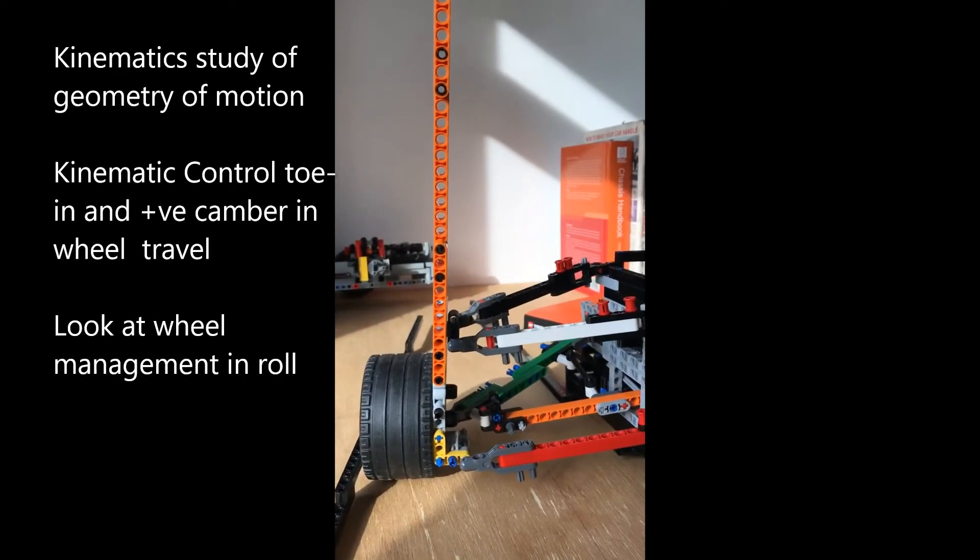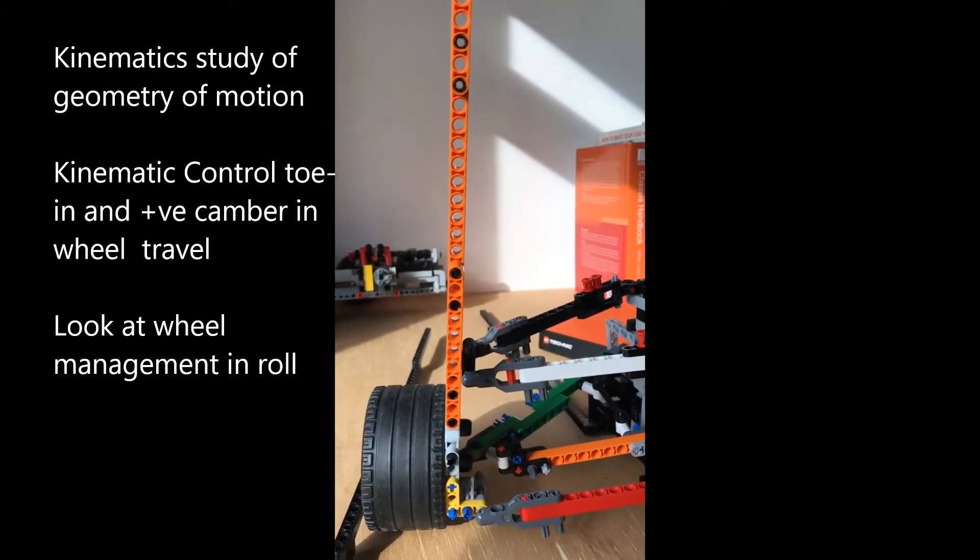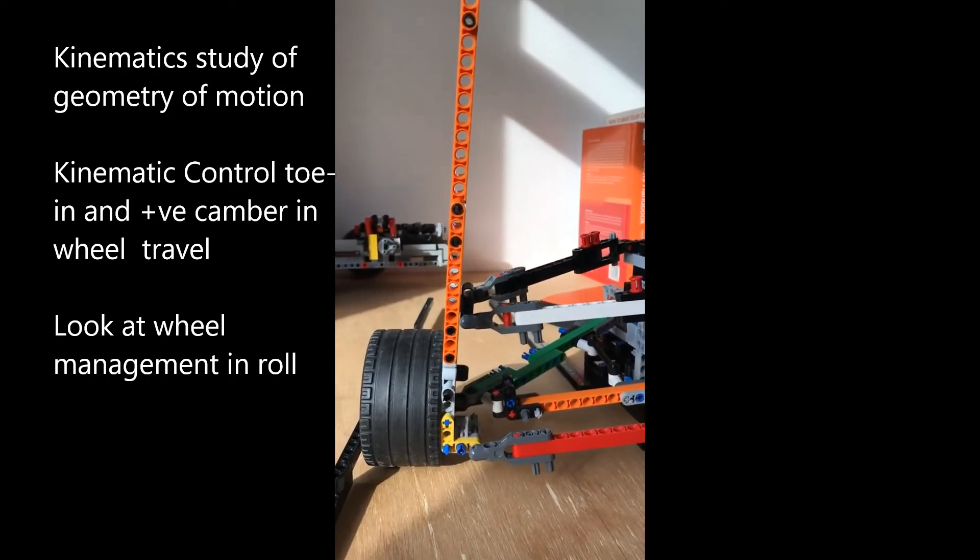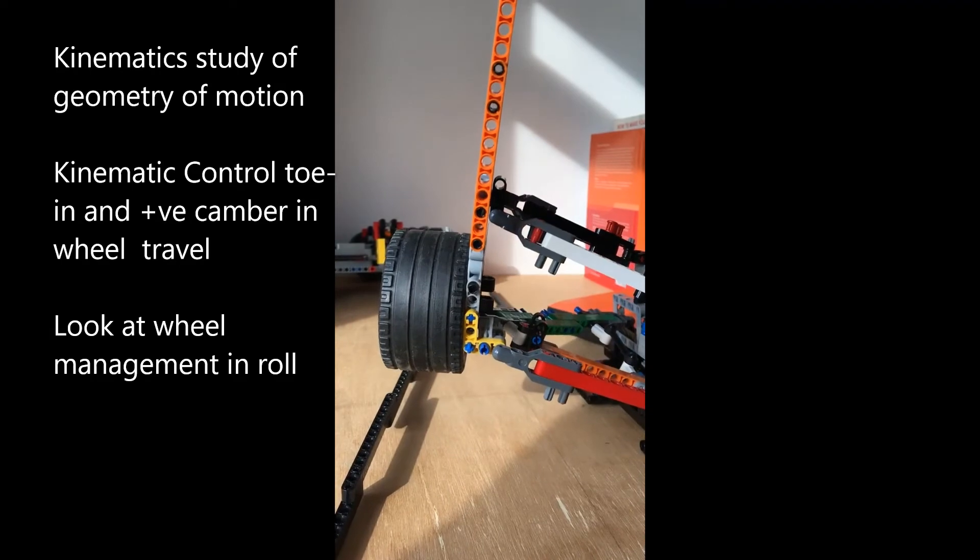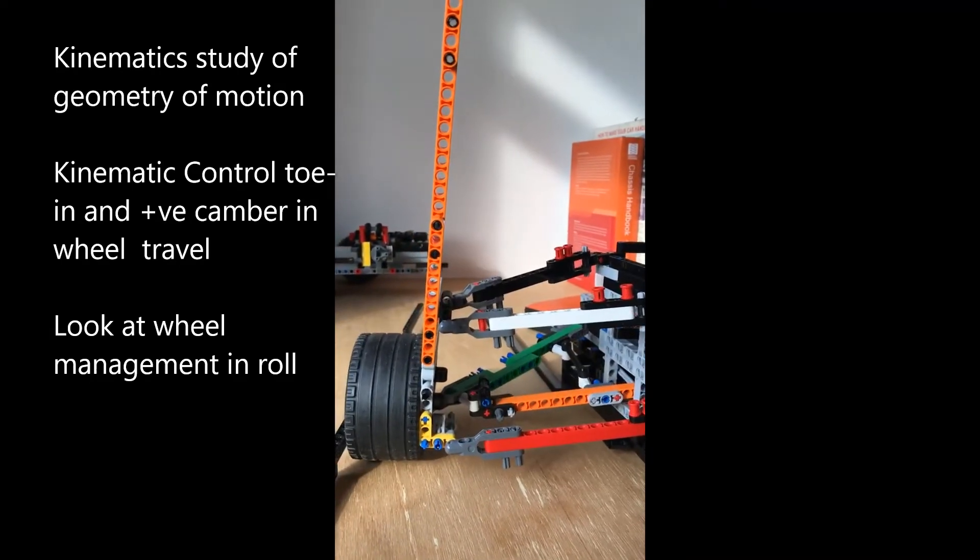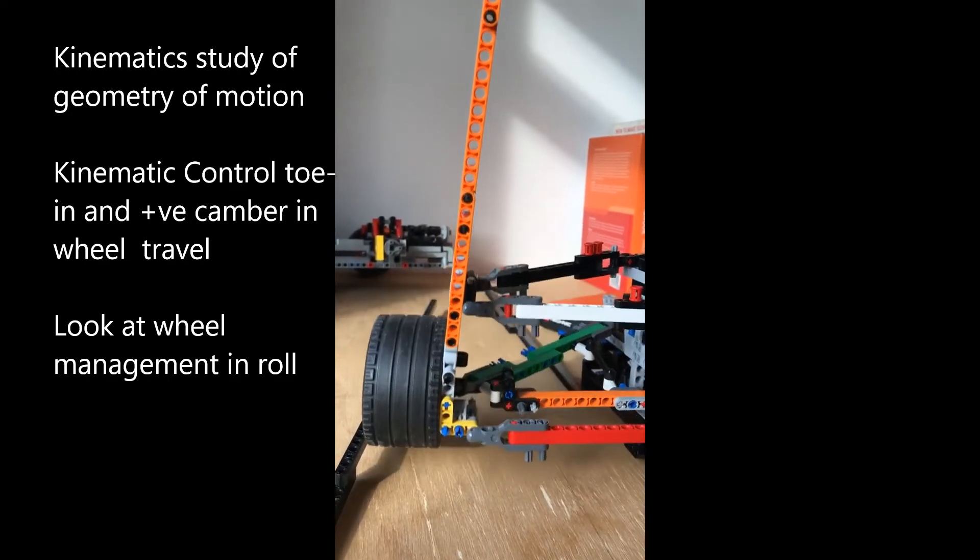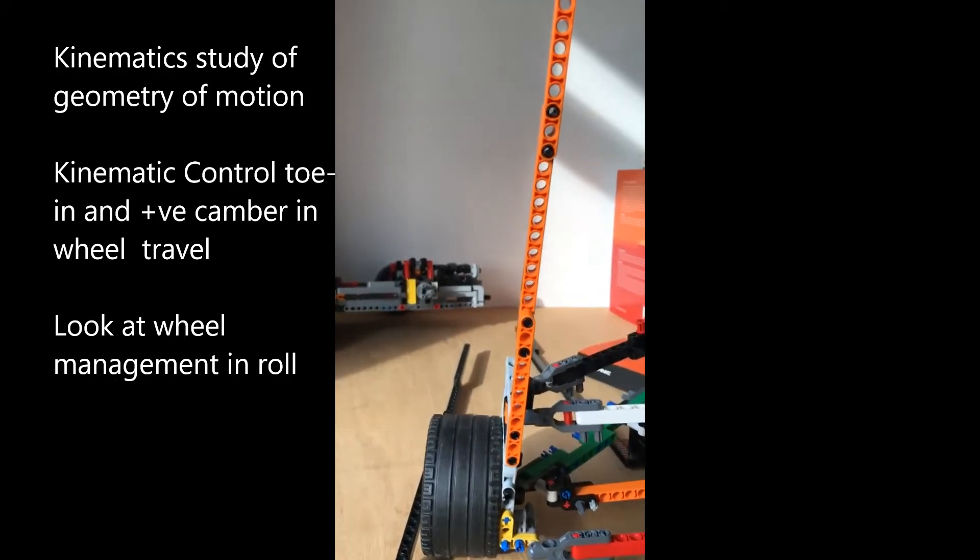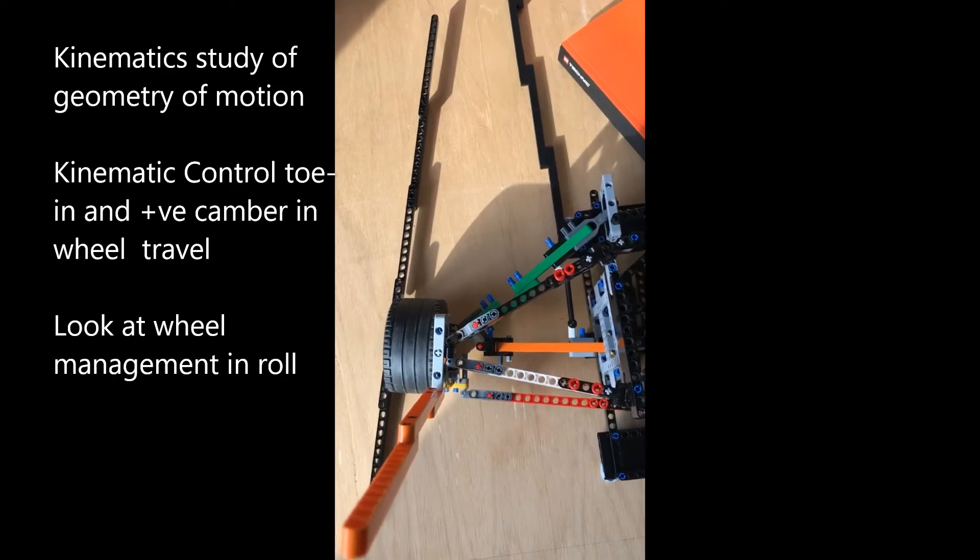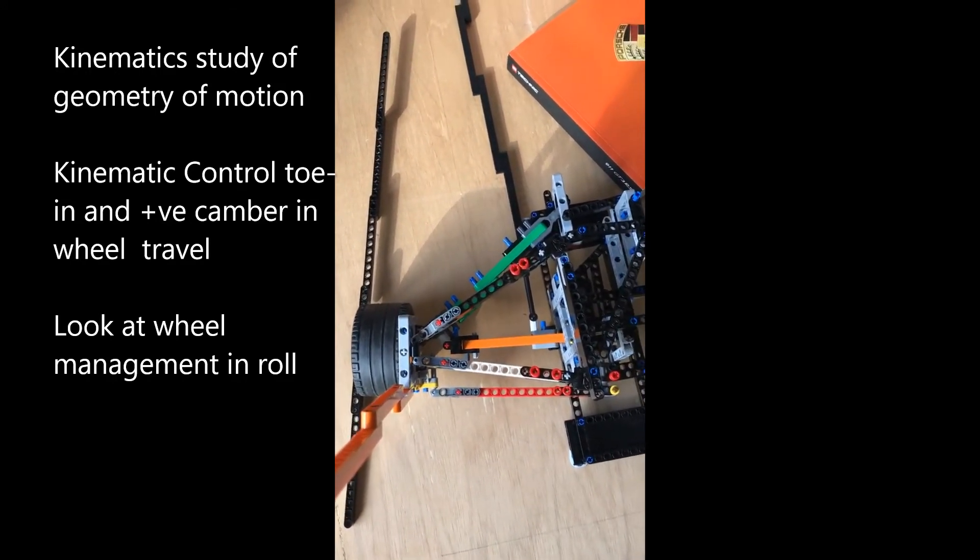So let's have a look at the kinematics, which is this study of the motion. So if we study the wheel in the end elevation here in compression and droop, that's compression and droop. So compression here when we're turning right, in the case of the rear left wheel. And we'll look at the kinematics in the top elevation here, or plan view.